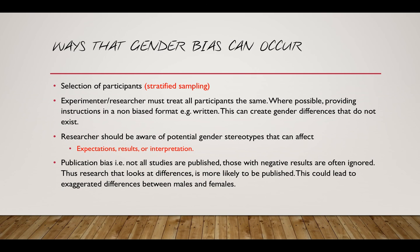Ways that gender bias can occur: selection of participants. If you take a random selection, you can get a disproportionate number of males or females in a study. Ideally, some form of stratified sampling should be used where the exact target population's demographic makeup is represented in your sample. Information should be provided in a non-biased way, so that there are no differentiates for gender. We should always be aware of gender stereotypes.